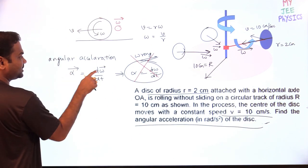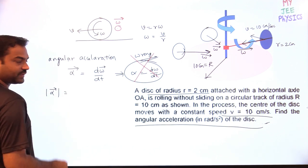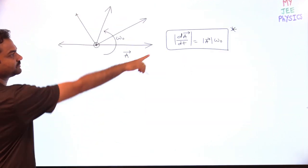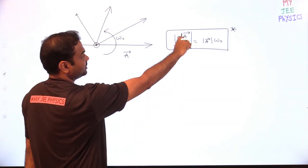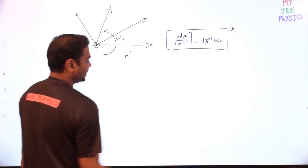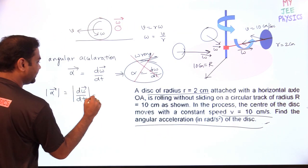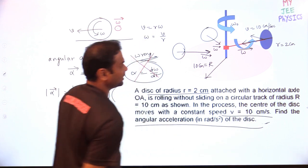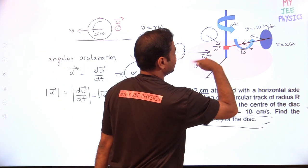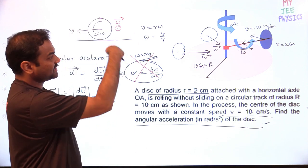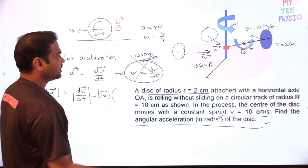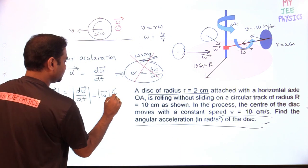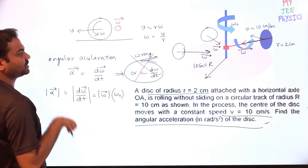Now, the magnitude of alpha = magnitude of d(omega bar)/dt. Using the same formula, this equals the magnitude of omega bar times omega_naught — where omega_naught is the angular velocity with which the omega vector (the axis) is revolving. The disc rotates with angular velocity omega, and the axis revolves with angular velocity omega_naught.